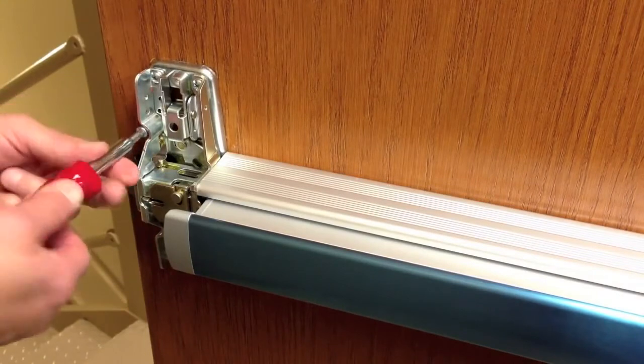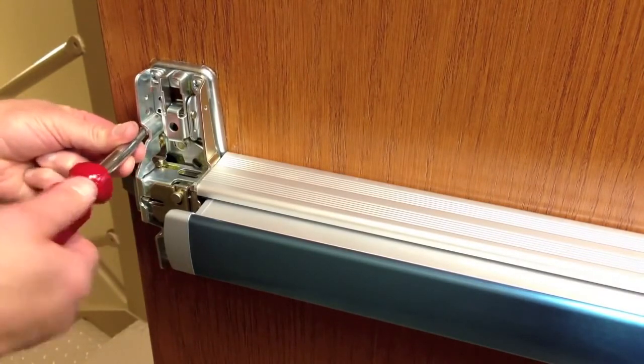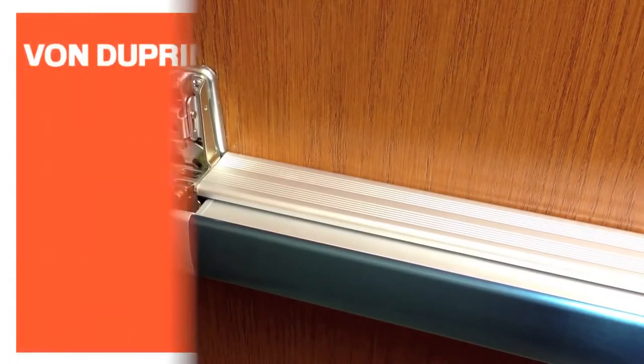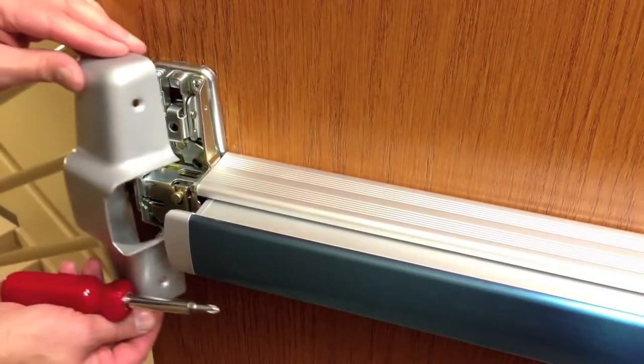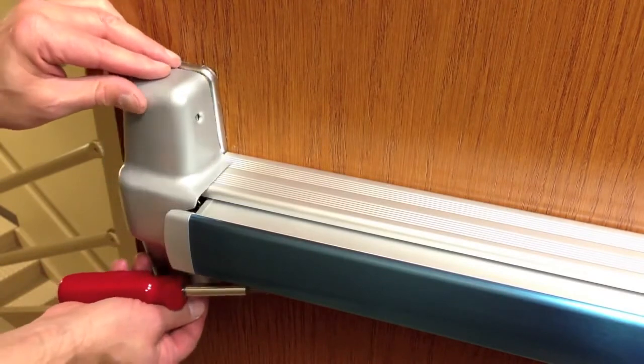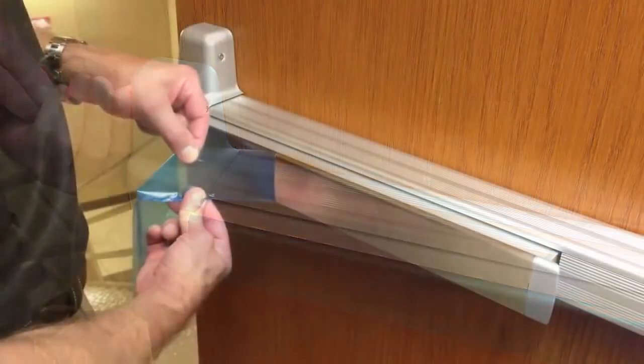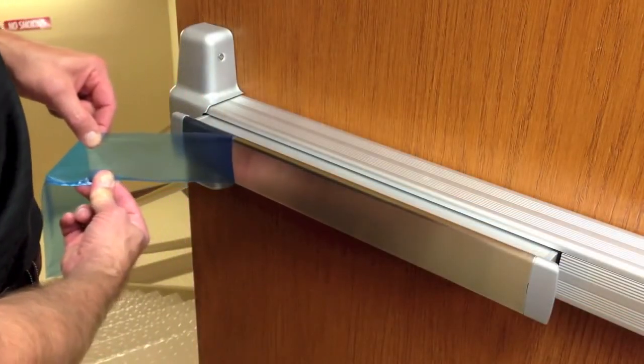Install the two support screws. For fire rated wood or composite doors, use sex bolts with the screws. Install the center case cover with the four provided screws. Remove the protective film from the push bar.